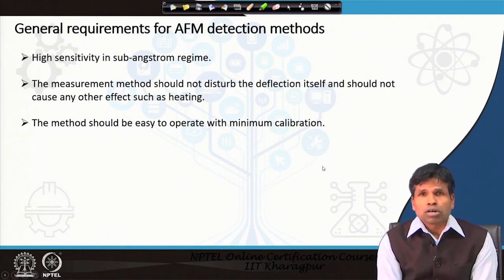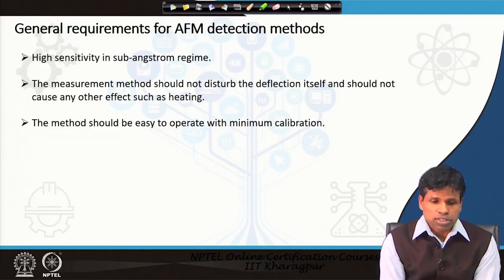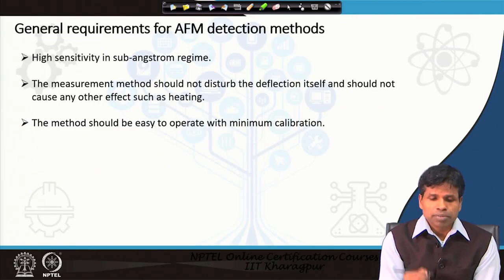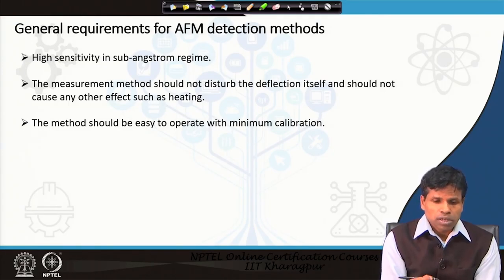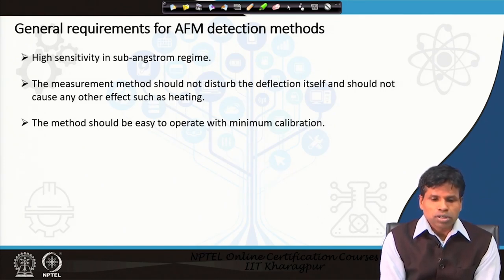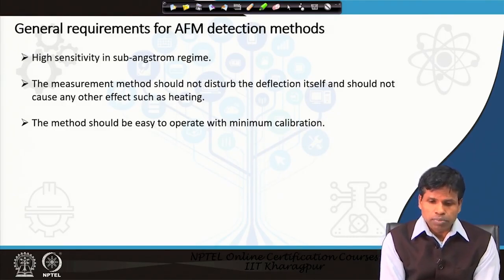The requirements for this detection method are that high sensitivity of the detection system is needed in the sub-angstrom region, because the height measured in AFM is normally below 1 angstrom. The deflection of the AFM cantilever is in the angstrom range, so the detection system should allow measurements in the sub-angstrom regime. Also, the measurement method should not disturb the deflection itself, should not cause any other effect such as heating, and should be easy to operate with minimum calibration.